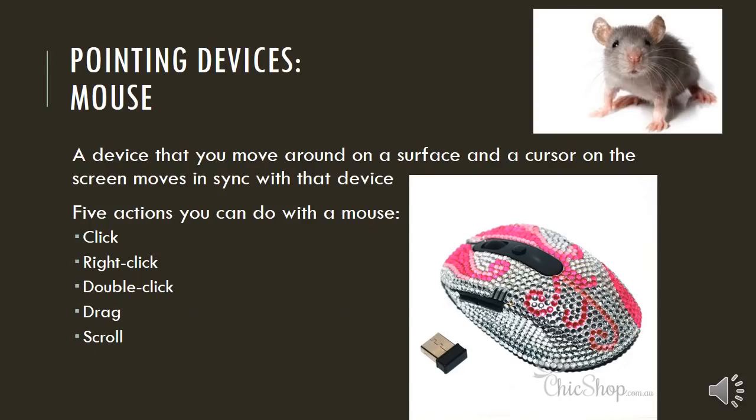We have pointing devices. This is your mouse. If you had to describe a mouse, it's a device that you move around on a surface and a cursor on the screen moves in sync with that device. There are five actions you can do with the mouse: you can click, right click, double click, drag, and scroll with the wheel in the middle of the mouse.